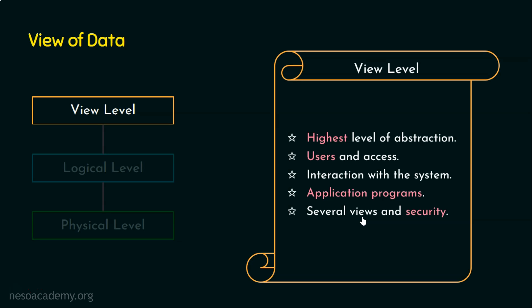Here is one more example. When you go to an ATM machine and insert your ATM card, only your details are fetched — this is view 1. When I insert my ATM card, the database system provides only my details — this is another view. This is how multiple views exist, and security is strongly enforced: I can access only my data and am not given access to others' data. That's how security is also achieved at the view level. As the course progresses, we will understand even more about multiple views and security.